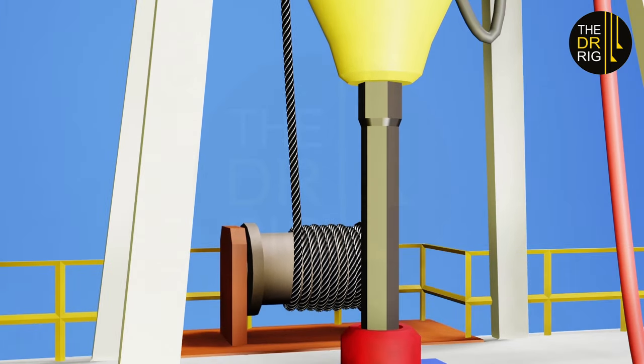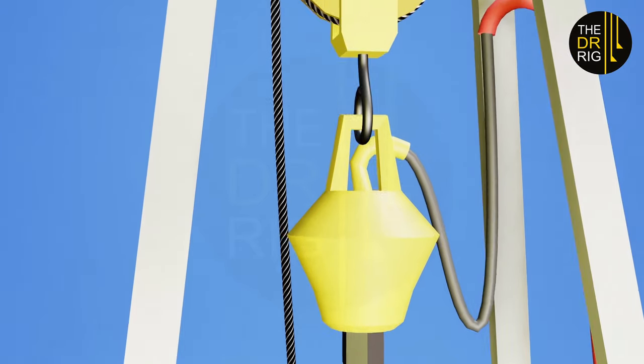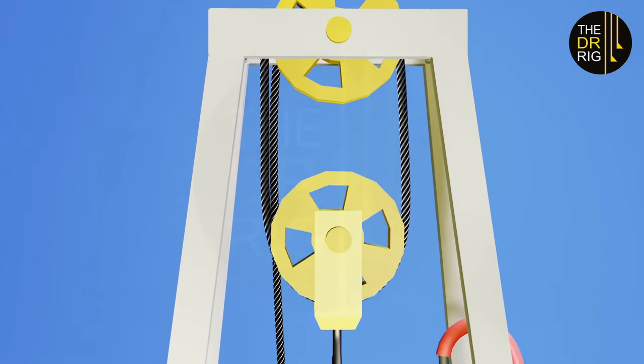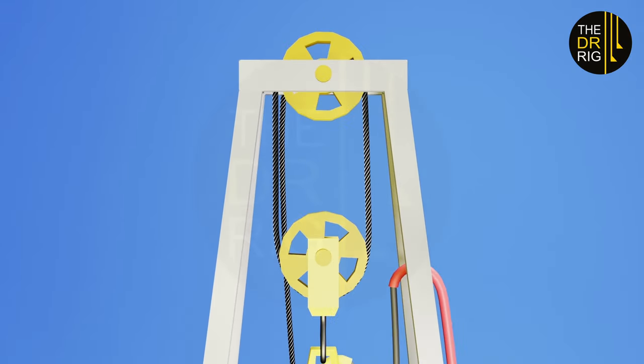A system consists of a large winch called a drawwork with a set of pulleys is used to lift and lower the drill string and control the applied weight.